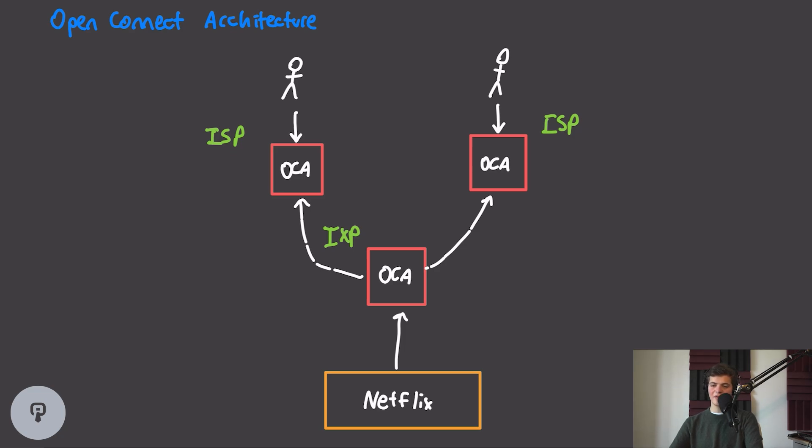Next up, if we have Open Connect appliances deployed directly on the internet service providers, these appliances can pull new data from the internet exchange points. This is going to require a lot less bandwidth than going directly to Netflix, because the traffic won't have to traverse across internet service providers, assuming that this internet service provider is also peering with Netflix at the internet exchange point. And then finally, of course, we have our users that can access the content stored on these Open Connect appliances.